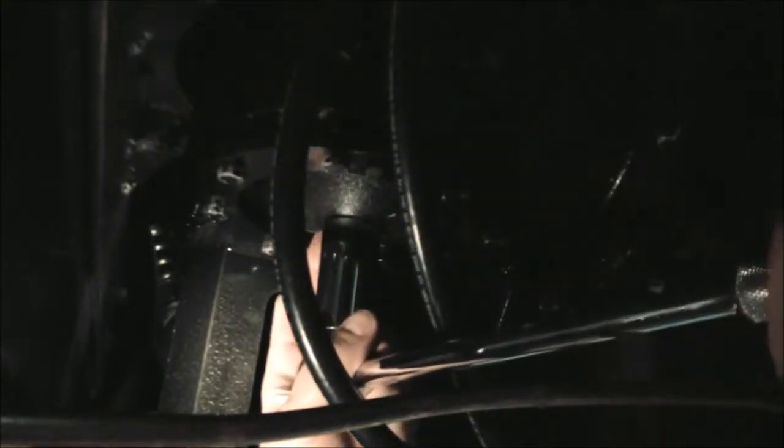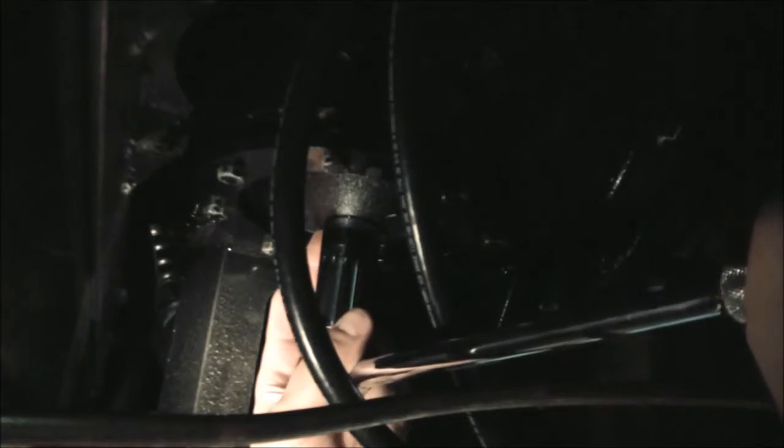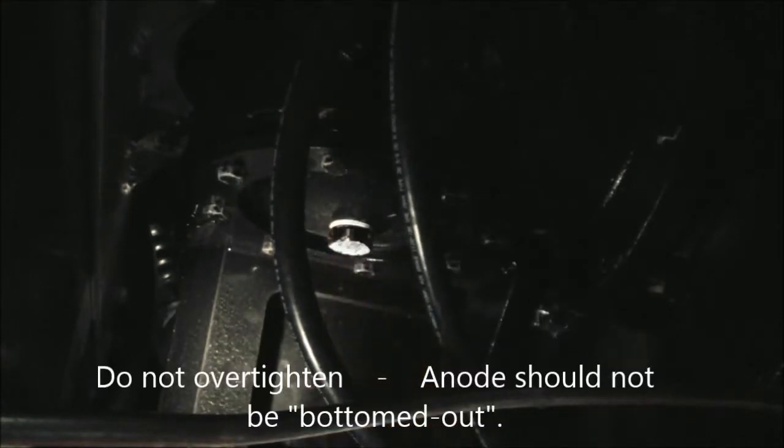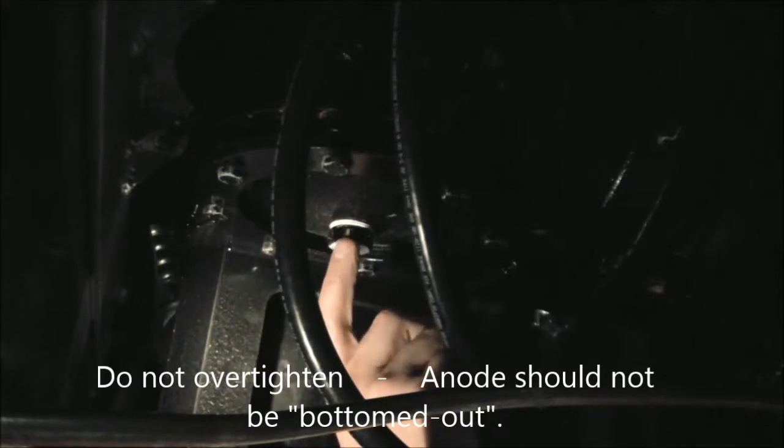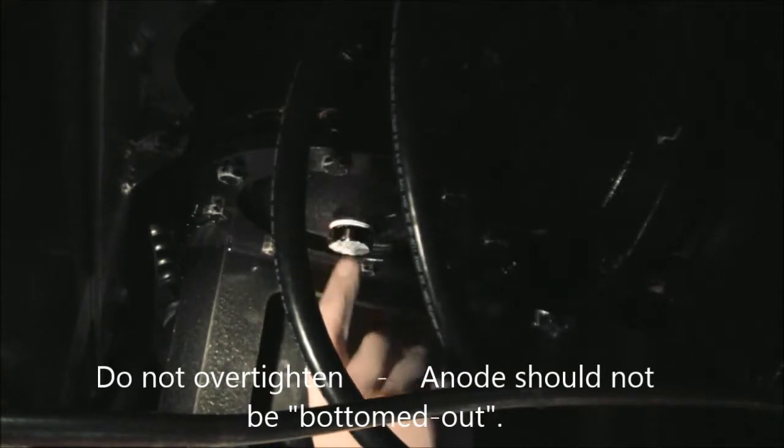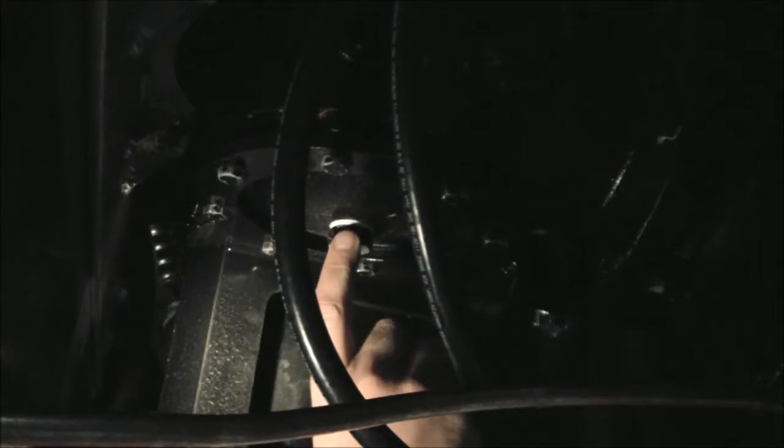We don't have an exact torque spec. You got to kind of use some common sense here as we are installing brass into cast iron and usually about if I had to guess I'd say between 20 to 25 foot pounds of torque and you'll notice that we've got just a baby maybe one thread left before it's bottomed right out into that flange. So you want to make sure you do not bottom the anode directly into that into that casting into that cast iron flange.